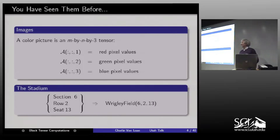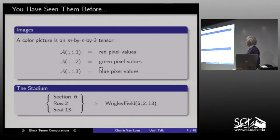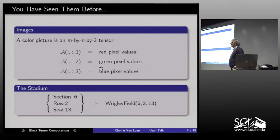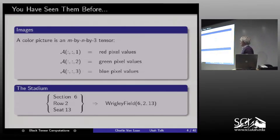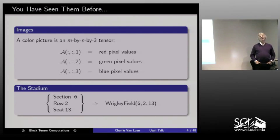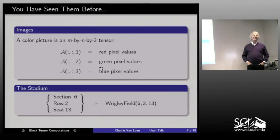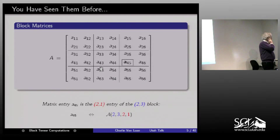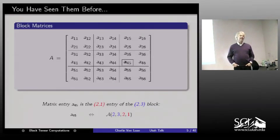To make you comfortable: a picture has a red, green, and blue matrix — stack them one on top of another and you have a third-order tensor. Any time you go to a stadium and are told to go to a certain section, row, and seat, you are doing a tensor computation — a triplet of integers naming a location. A block matrix is secretly a tensor.